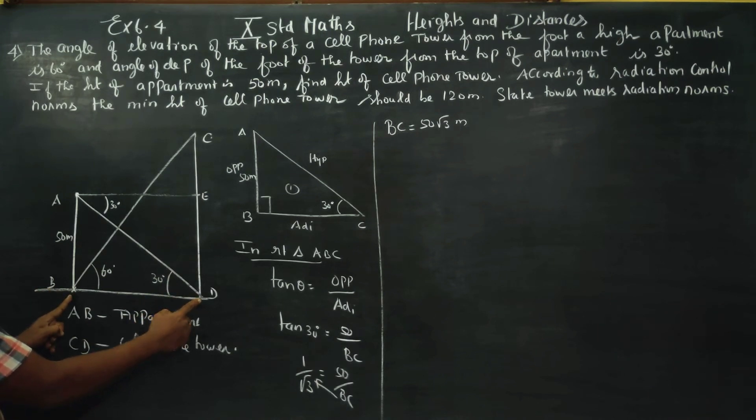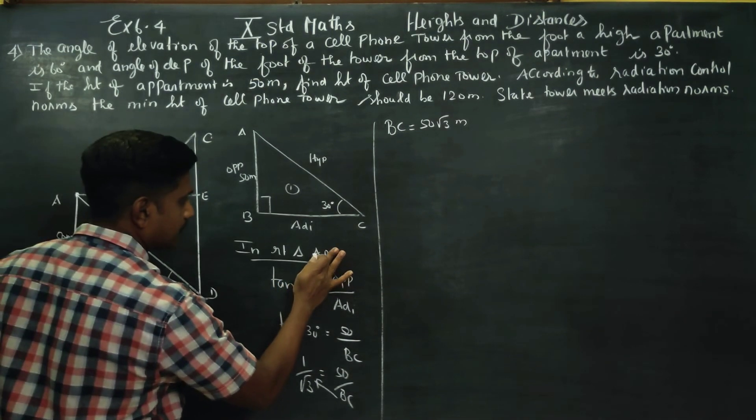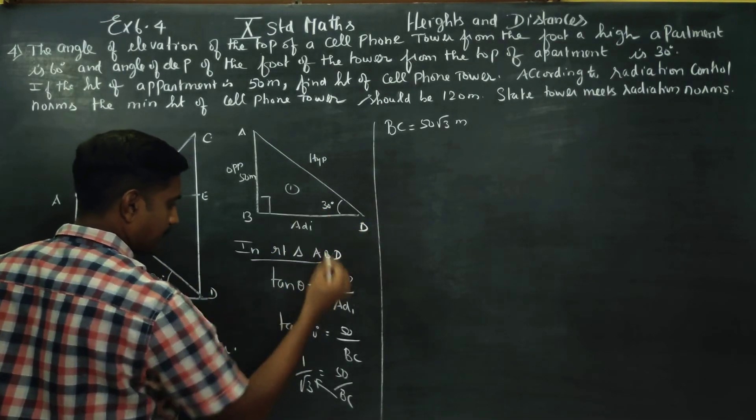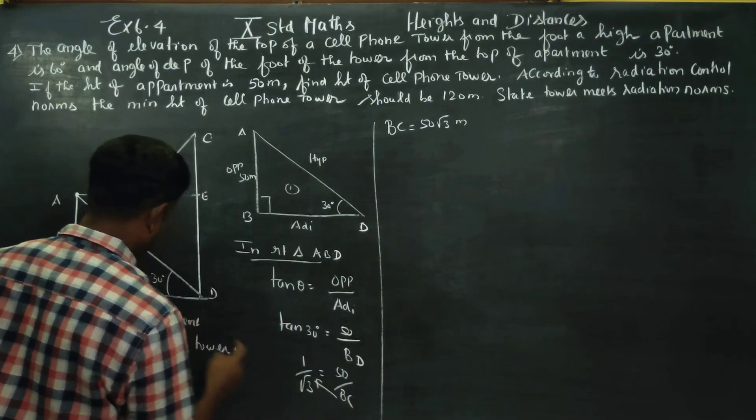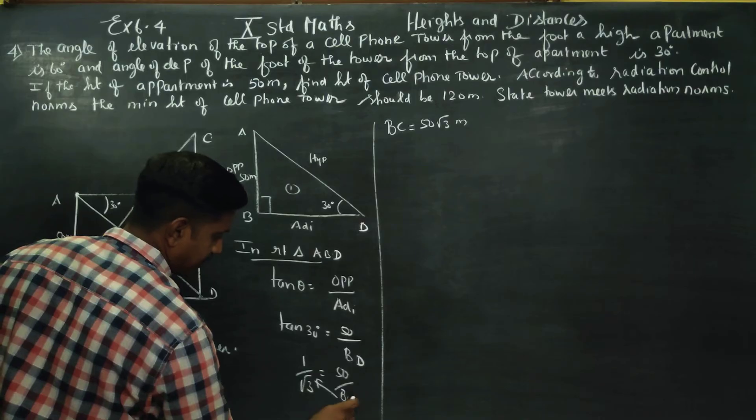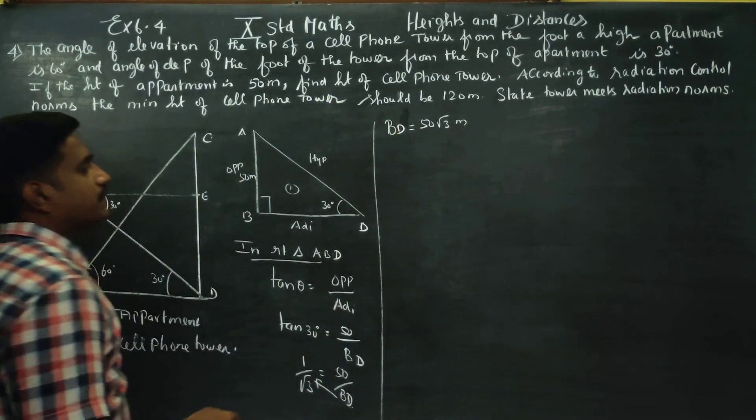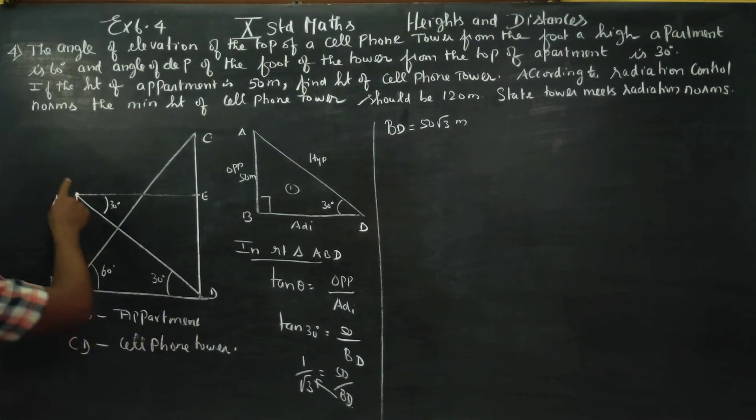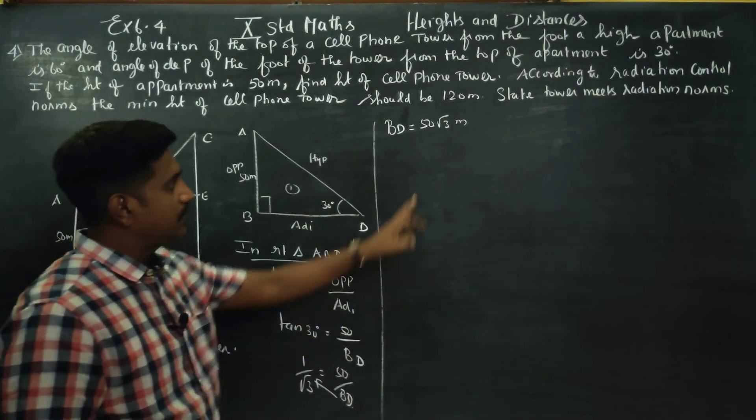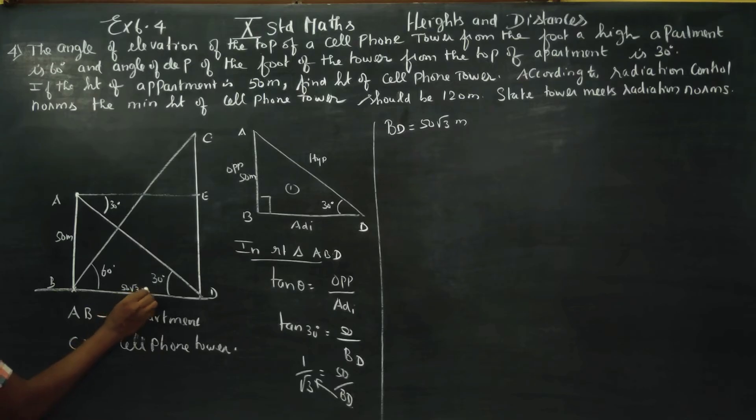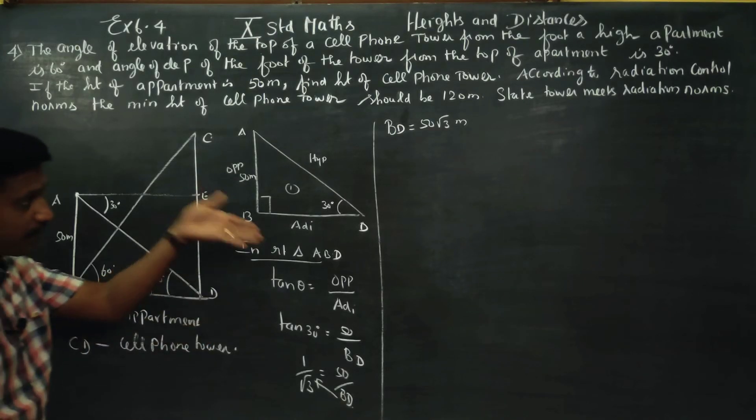BC is BD. ABD is equal to 50 root 3. Triangle ABD can give BD as 50 root 3 meters.